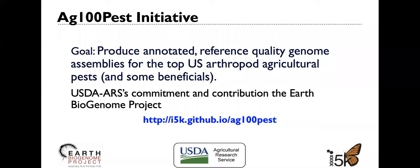Sequencing of our pest insects is part of the Ag 100 pest initiative at USDA ARS. The goal is to produce annotated reference quality genome assemblies for the top US arthropod agricultural pests and some beneficial insects as well. This is USDA ARS's commitment and contribution to the Earth Biogenome Project. You can learn more about the Ag 100 pest initiative at the GitHub page below.